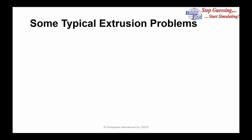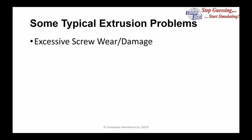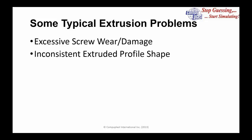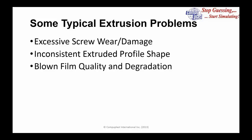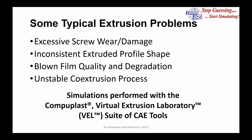Now we're going to review some typical extrusion problems. The first is excessive screw wear or damage. The second is inconsistent extruded profile shape — problems in profile extrusion. The third will be blown film quality and degradation. And the fourth will be investigating an unstable coextrusion process. All of these problems will be investigated using the CompuPlast Virtual Extrusion Laboratory, or VEL, suite of CAE tools.